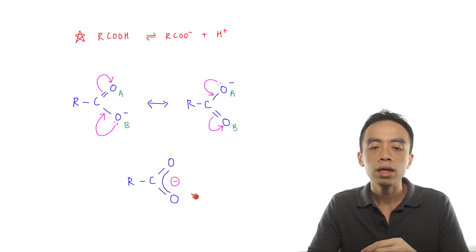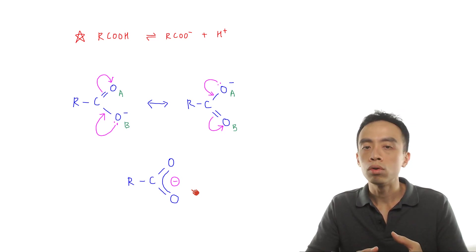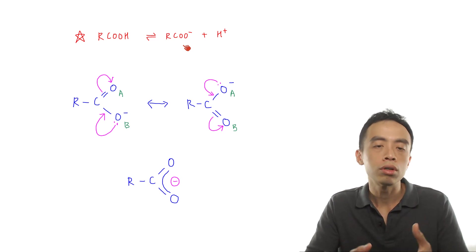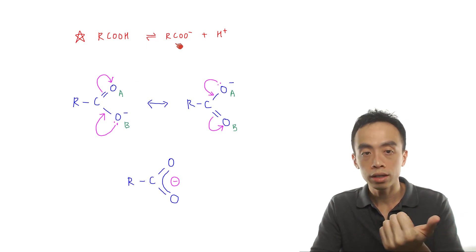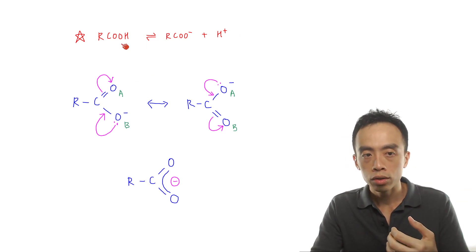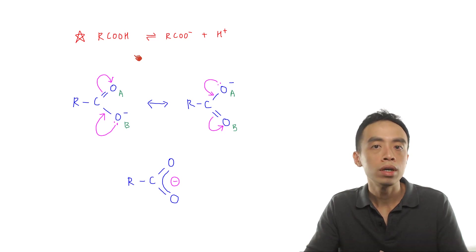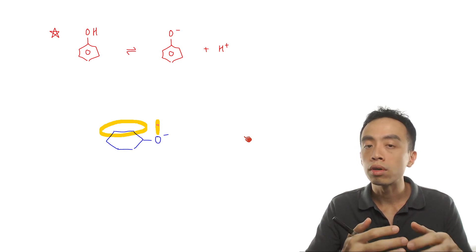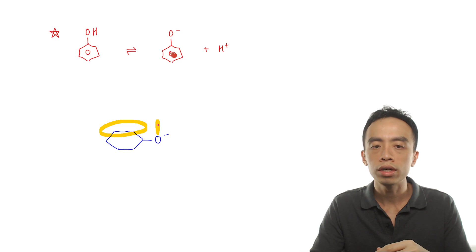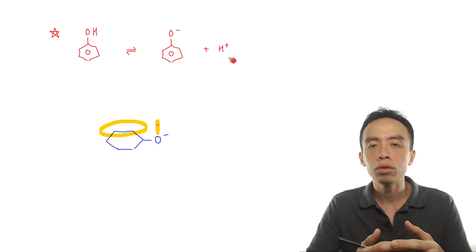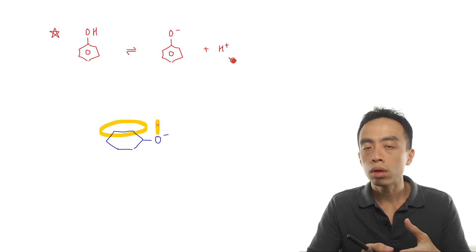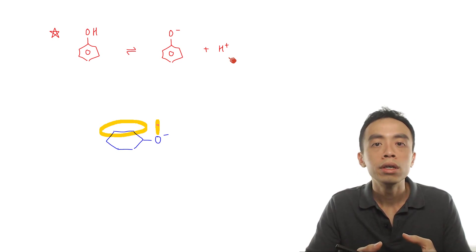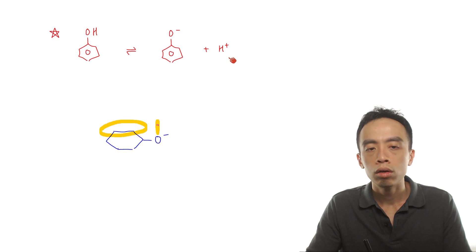Because this delocalization is extensive — with electronegative oxygen on both ends pulling electrons — the spread of negative charge is very good. Both electronegative oxygens help pull the electron density as close to themselves as possible, making this a very good, extensive delocalization. That is why carboxylate, in terms of conjugate base stability, is the most stable, and therefore carboxylic acid is the most acidic functional group in A-level syllabus. Next, let's look at phenol and its dissociation.